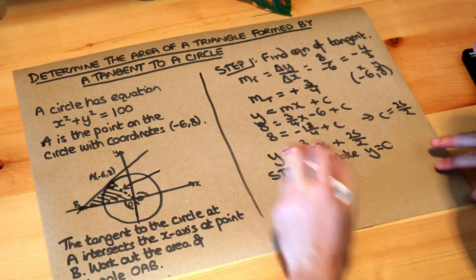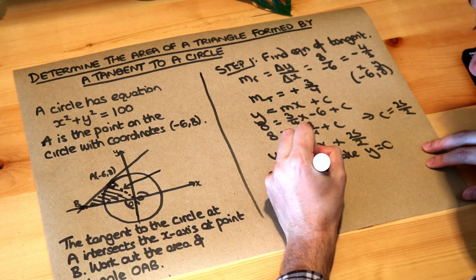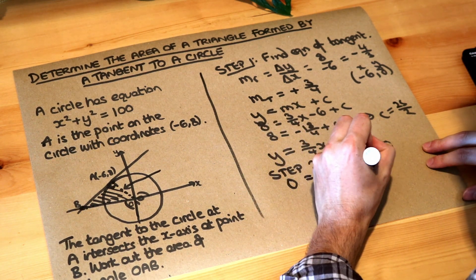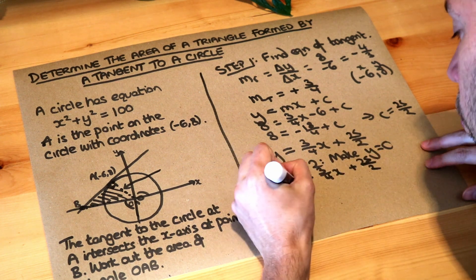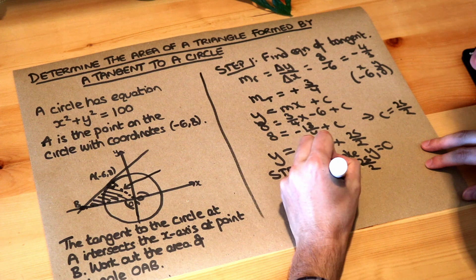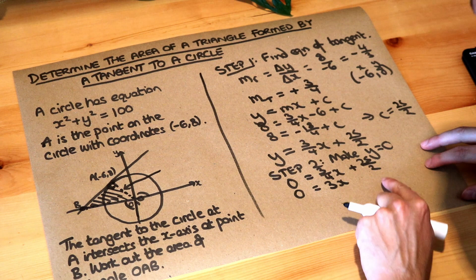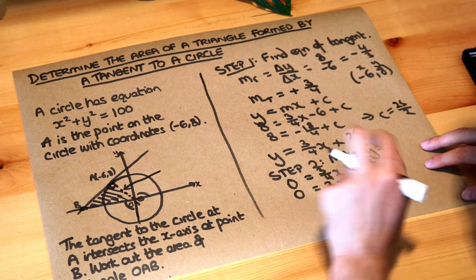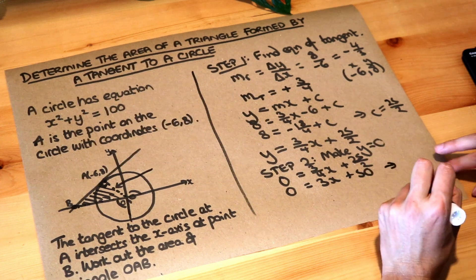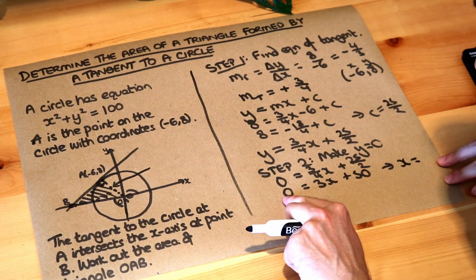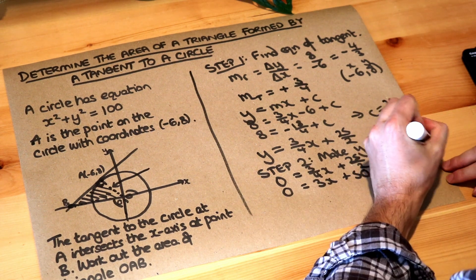But here we're making y zero. So if we make y zero in this equation, zero equals three-quarters x plus 25 over 2. Just times everything by four, so zero equals 3x, because if you times that by four, it gets rid of the over four. If you times that by four, it times by 2 to get rid of that, and then 2 again, so it's plus 50. And that gives you x is, well if we subtract the 50, we get minus 50 over 3.